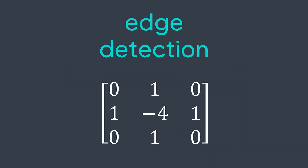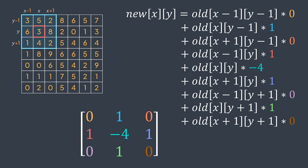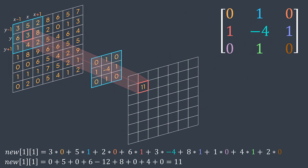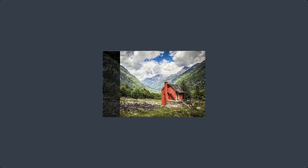For example, for edge detection, a possible kernel is: 0 1 0 / 1 -4 1 / 0 1 0. So for each non-edge pixel, we multiply the top-left by 0, top by 1, top-right by 0, left by 1, the actual pixel by -4, right by 1, bottom-left by 0, bottom by 1, bottom-right by 0. We do the sum and get the value of the actual pixel on the new image. Here is an example where the new value of pixel (1,1) is 11. After doing so for each non-edge pixel, we get the result after applying edge detection.